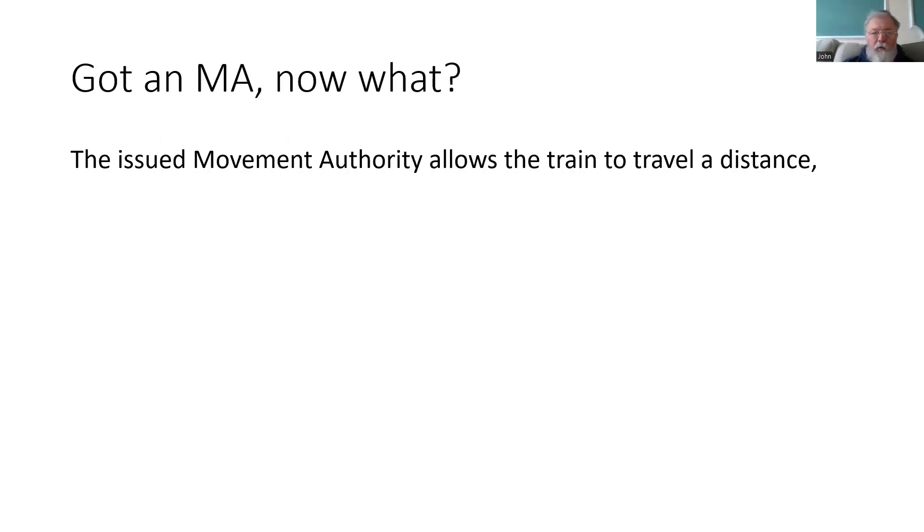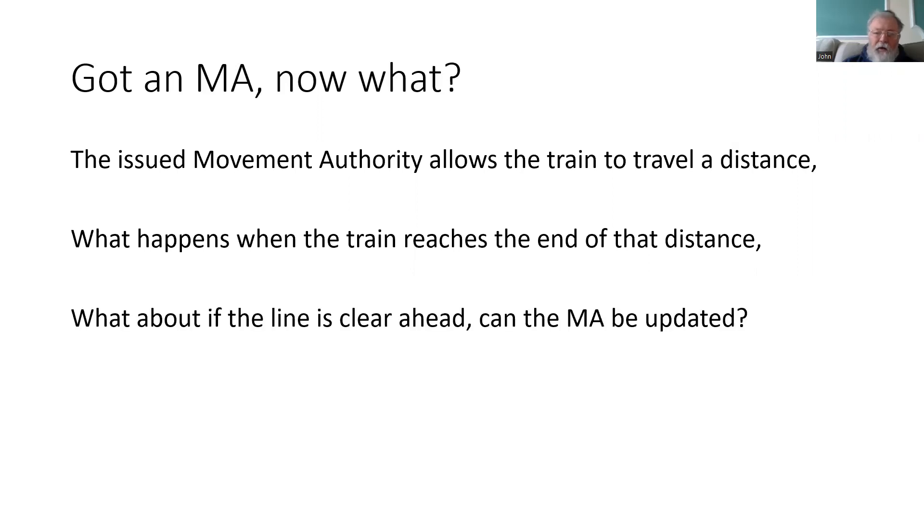Well, we know that the issued movement authority allows the train to travel a certain distance, and at the end of that distance it will be supervised to a stand. But what happens if in the time that the train is traveling, the line ahead is now proved to be clear? How can we update the movement authority?